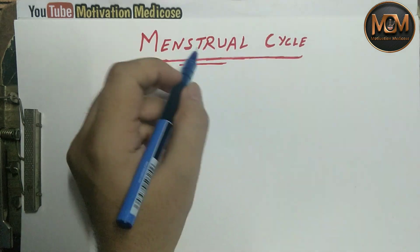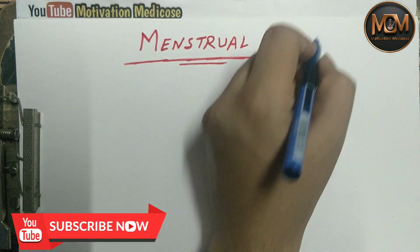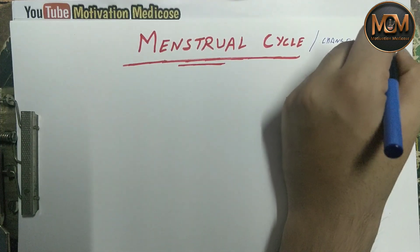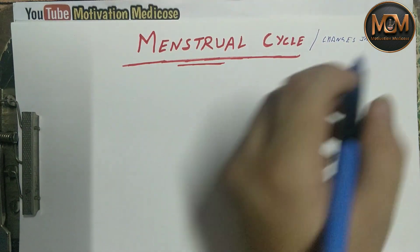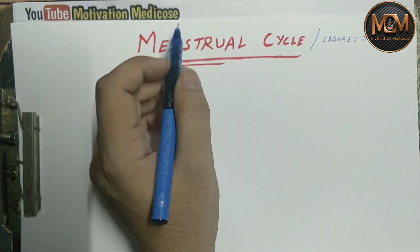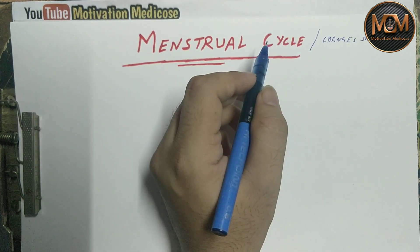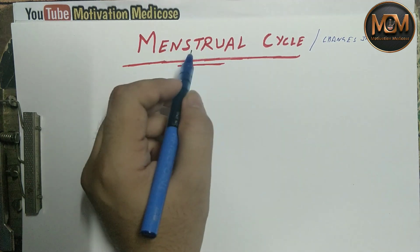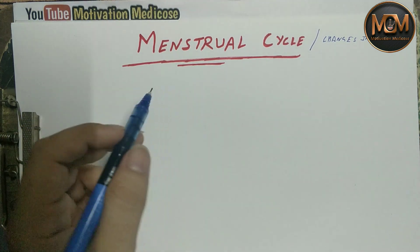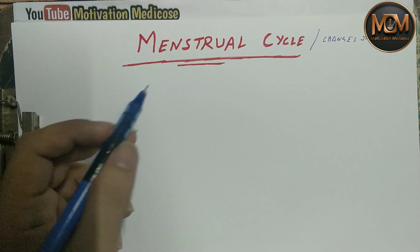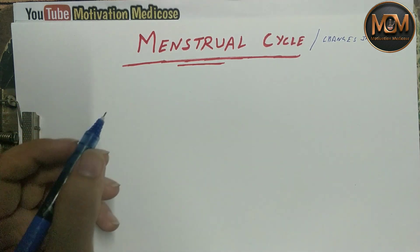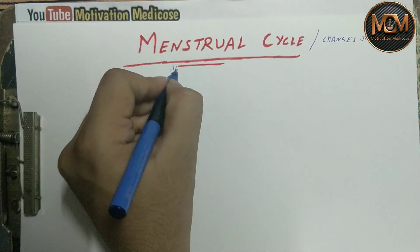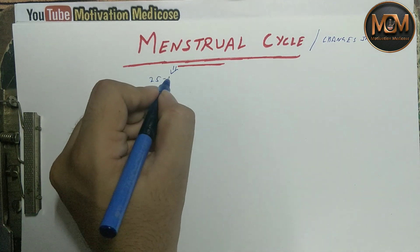As the name suggests, the menstrual cycle — we can also call it the cycle of changes in the uterus. Let's break the name: 'cycle' means anything which occurs periodically, at fairly uniform intervals. 'Menstrual' comes from 'menses,' and menses means lunar month, which is about 28 days. So the menstrual cycle is basically a recurrent monthly discharge of blood from the female genital canal, with a duration of 25 to 35 days.